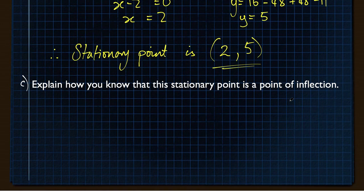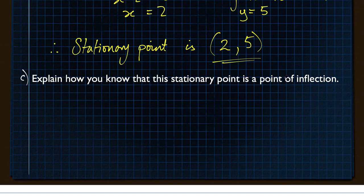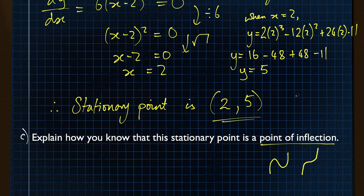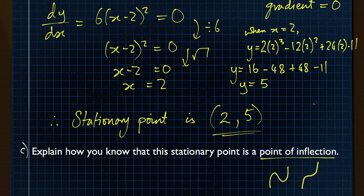The question also asks to explain how you know that this stationary point is a point of inflection. A point of inflection means the curve doesn't turn — the gradient becomes zero and then the graph immediately increases again. With a point of inflection, the gradient is always positive until it hits zero, then becomes positive again; it never has a region where it becomes negative. This is indicated partly because we have only one solution — there's only one point when the gradient is zero.